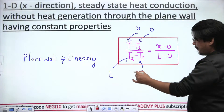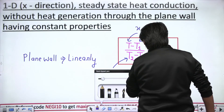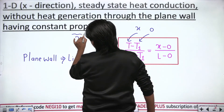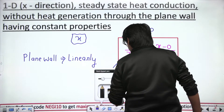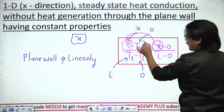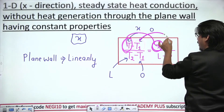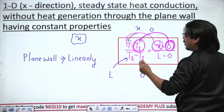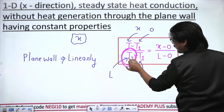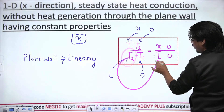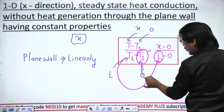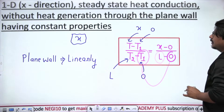Let me recap all three. For the plane wall, temperature varies linearly with x. So in the formula, wherever we have the temperature T, we use x; for T1 (left face, x = 0) we use 0; for T2 (right face) we use L; and for T1 in the denominator we again use 0. It's a direct substitution from the straight-line equation.